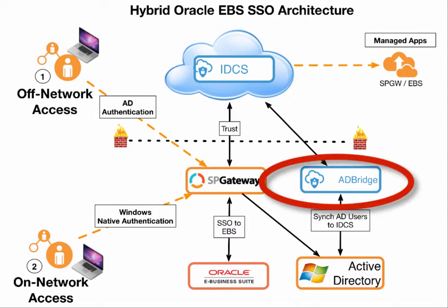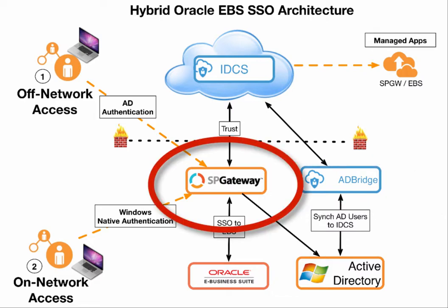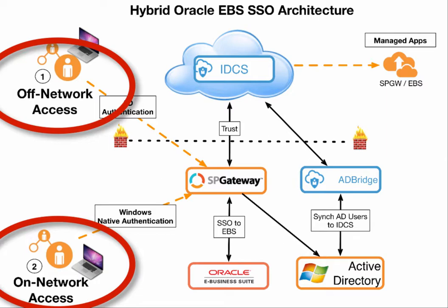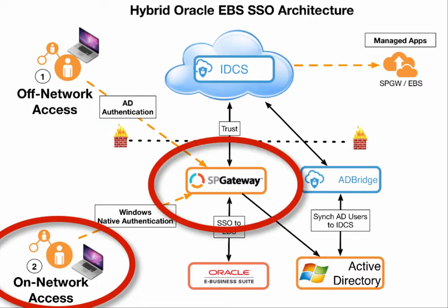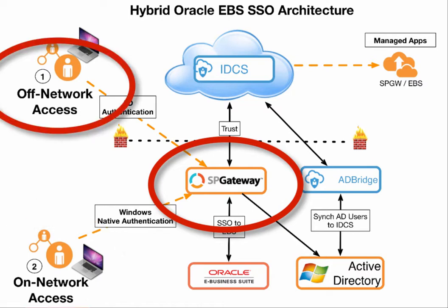The AD Bridge component is a lightweight agent that runs on-premise. This agent uses Active Directory as a source of record and will provide basic user lifecycle management functions for IDCS. SP Gateway will be used to provide Active Directory authentication services for both on-network and off-network users. For on-network users, SP Gateway will provide a seamless authentication experience by using Desktop SSO, whereas off-network users will be prompted for their AD credentials in order to access the EBS system.